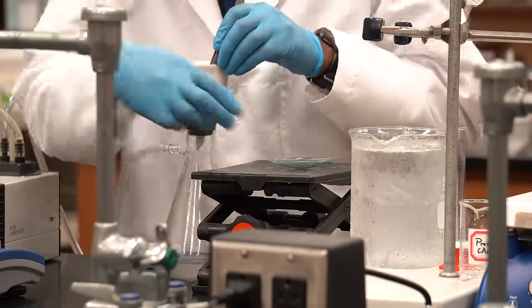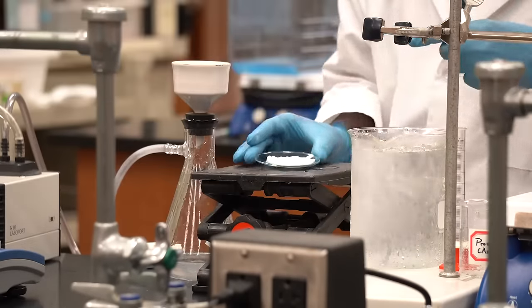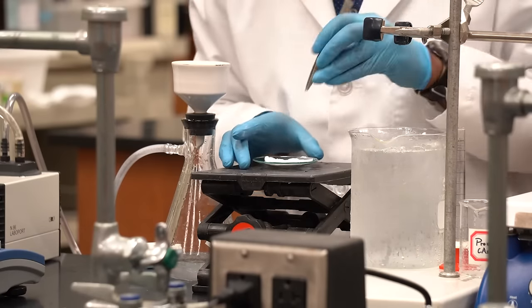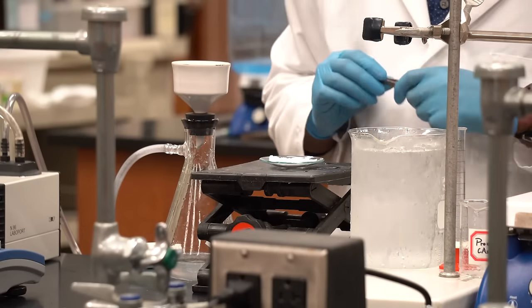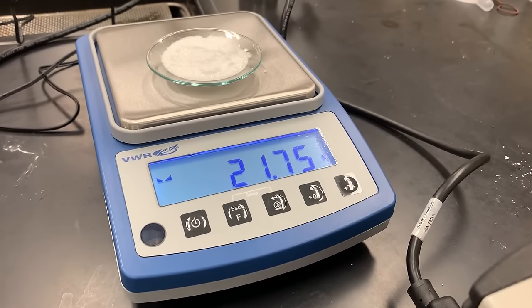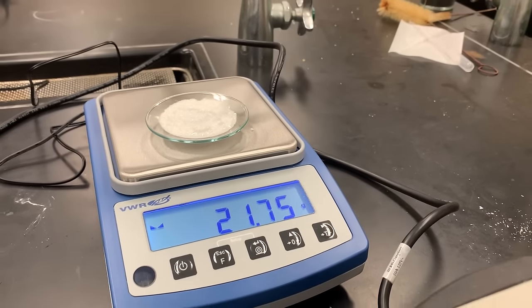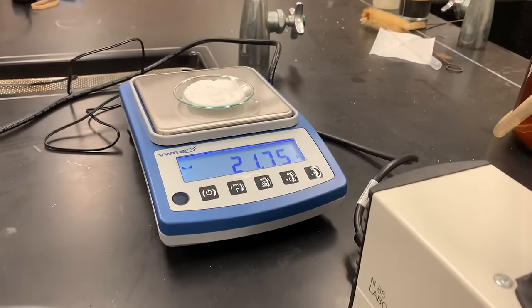We can then put our filter paper with our product on the watch glass and leave it at room temperature to air dry, or use the oven at 65 degrees celsius for 20 minutes. After you get a dry product, let's place it on a scale to weigh it. The mass of your purified sample is calculated by taking this number and subtracting the mass of the watch glass plus the filter paper that you measured earlier.